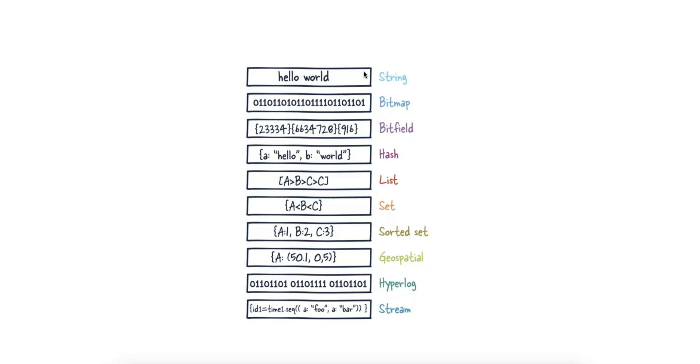The key is a string used to uniquely identify the data, like user:123. The value is the actual data being stored, which could be a simple string, binary data, or a more complex data structure.